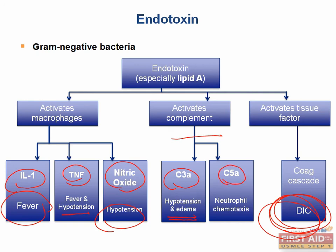Lipid A can also activate the complement pathway. C3a causes hypotension and promotes edema. C5a is a powerful chemotactic agent that attracts neutrophils to the site of infection. Finally, endotoxin can activate tissue factor, initiating a coagulation cascade and DIC — disseminated intravascular coagulation. DIC is a consumptive coagulopathy in which coagulation factors are consumed as small clots form throughout the body, leaving the patient unable to clot blood and oozing from everywhere.